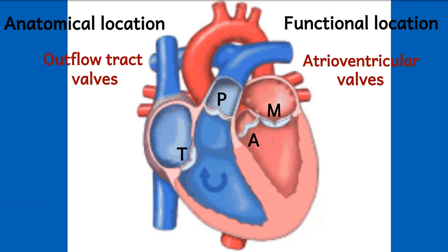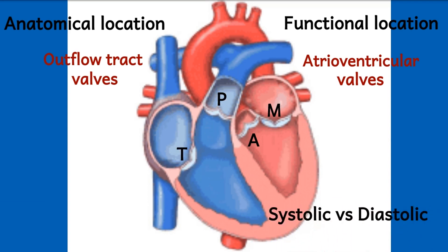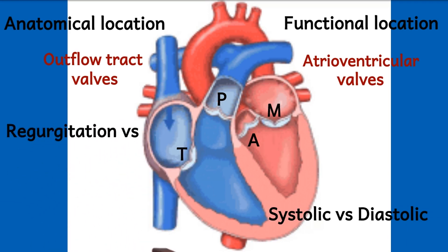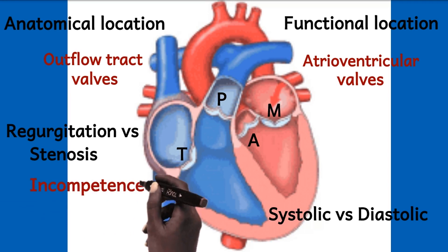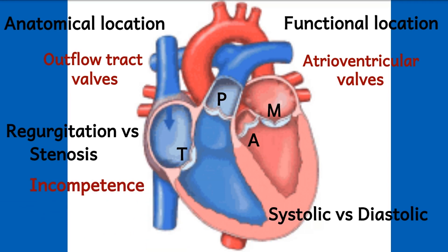Having understood this, the next thing to know is that murmurs can occur either during systole or diastole, meaning we can have systolic murmurs and diastolic murmurs. The four valves we've mentioned can have two basic problems: regurgitation or stenosis. Another term for regurgitation is incompetence. So we can have mitral valve stenosis, mitral valve regurgitation, tricuspid stenosis, tricuspid regurgitation, aortic stenosis, aortic regurgitation, and so on. With these few principles in mind, we are set for the mnemonic.